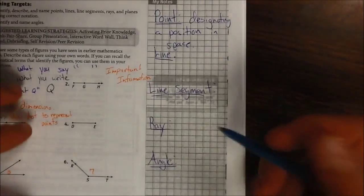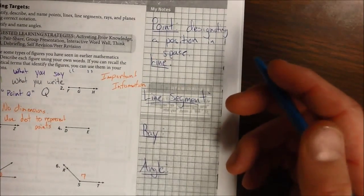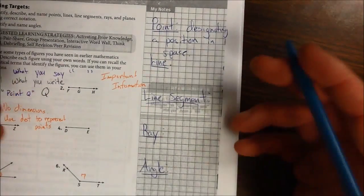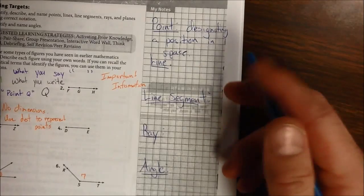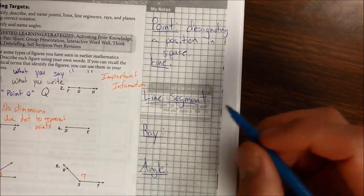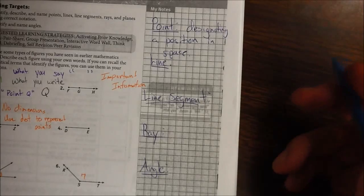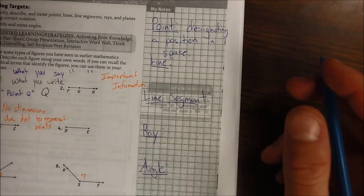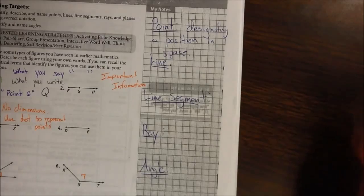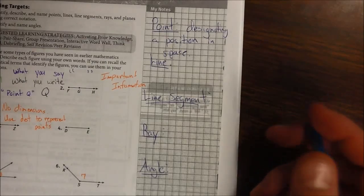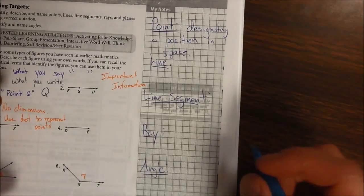So over here on the right, we're going to define what a line is. A line, it does have one dimension, but it continues forever and ever in two directions. So it's infinitely long, and it has no width, and it has no thickness to it.